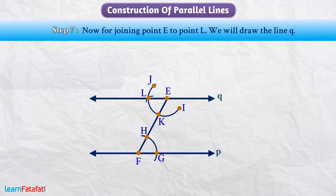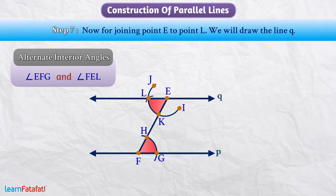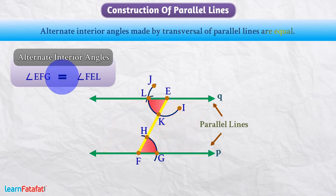Here we can see that angle EFG and angle FEL are alternate interior angles. For constructing it, we have not changed the radius of the compass. That's why these are equal. We know that alternate interior angles made by transversal of parallel lines are equal. So we can say that line P is parallel to line Q.